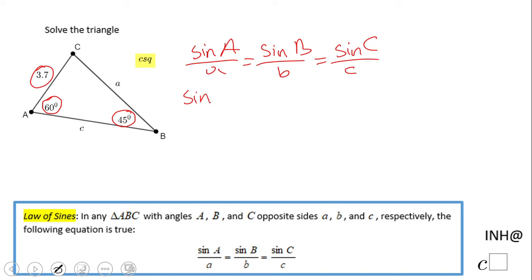And now we're gonna just plug in the things, right? Sine of A, sine of 60 degrees over a, that is one guy we need to find out, equals sine of B, sine of 45 over b. That b is given to us, it's the side 3.7, the opposite side, right? Equal sine of C, we do not know angle C.